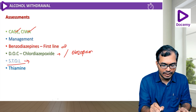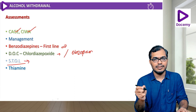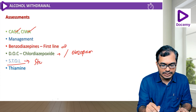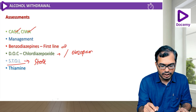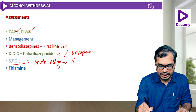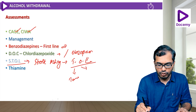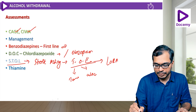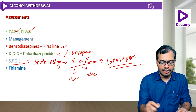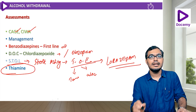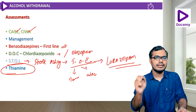When the patient has liver cell failure, we use short-acting benzodiazepines. The mnemonic is STOL: S for short-acting benzodiazepines, T for temazepam, O for oxazepam, and L for lorazepam.